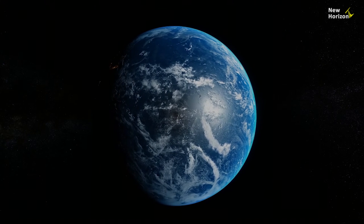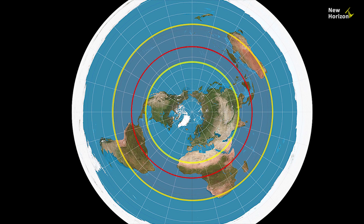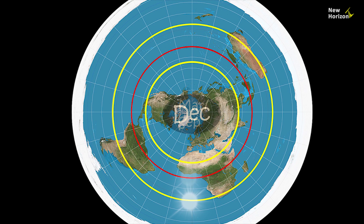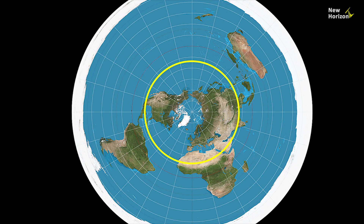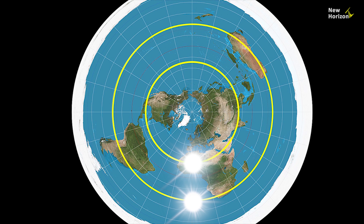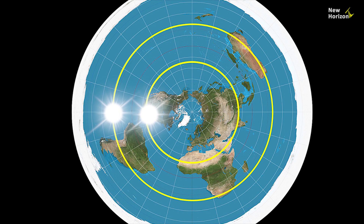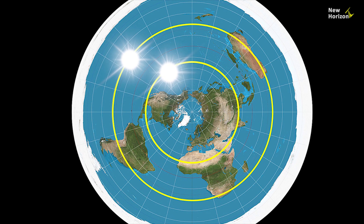Flat earthers use a global map projection to explain seasons. The tropic lines are the same on their map as on the globe map, showing the path of the sun during different times of the year. In the flat earth model, the Tropic of Cancer looks much shorter than the Tropic of Capricorn, meaning during December the sun has to travel a greater distance as it moves over the Tropic of Capricorn.